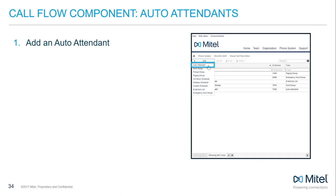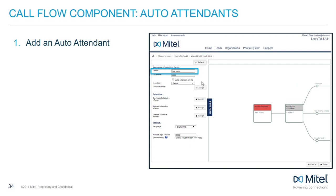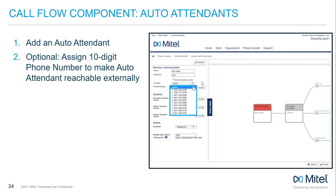Click Add and choose Auto Attendant from the drop-down. Name the auto attendant something unique and confirm or edit the automatically assigned system extension. Leave Make Extension Private unchecked if you want the auto attendant to be listed in the internal company directory. Assign the auto attendant to a location, and click Assign to choose from the available phone numbers on your account to assign an external telephone number.